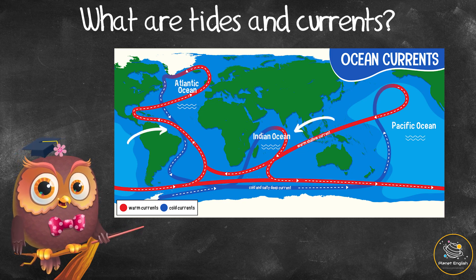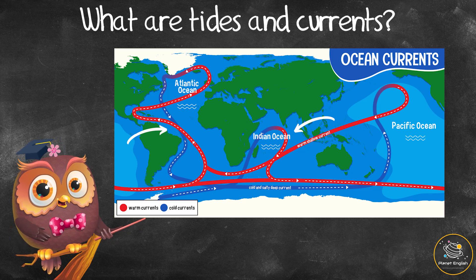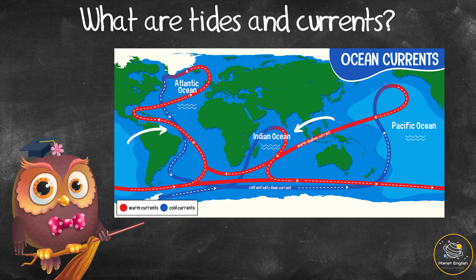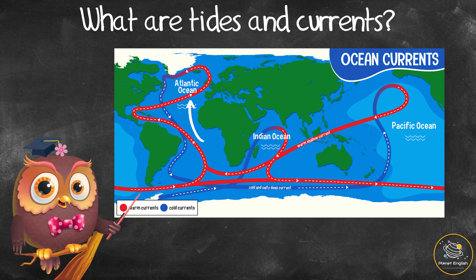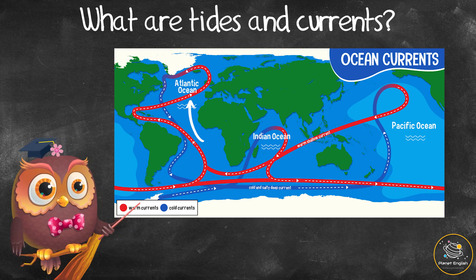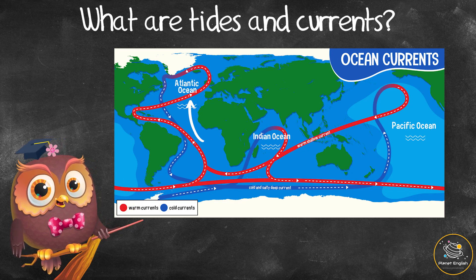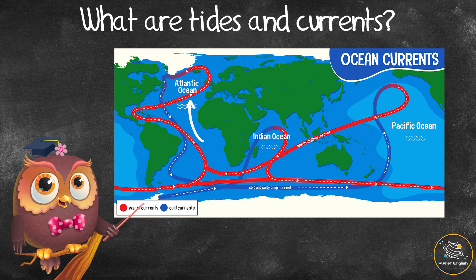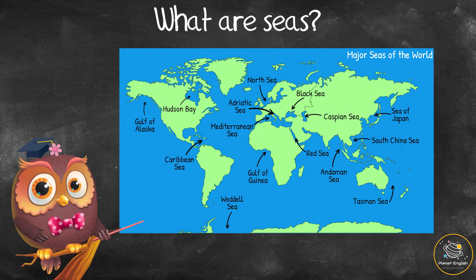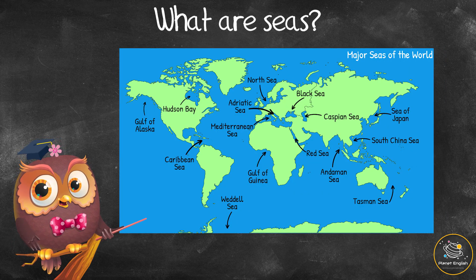Cold currents come from the poles and cause a cold, dry climate on nearby land. Warm ocean currents come from the equator and bring warm weather and rain to land. For example, the Gulf Stream current pulls warm water and weather from the equator to the coast of western Europe.